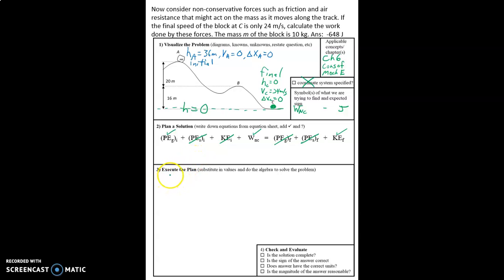So now we go ahead and execute our plan. We take our three terms, Mgha plus the work by non-conservative forces equals one-half Mvc squared. So I'm not using I's and F's here, just like in the last part, where we did part A.